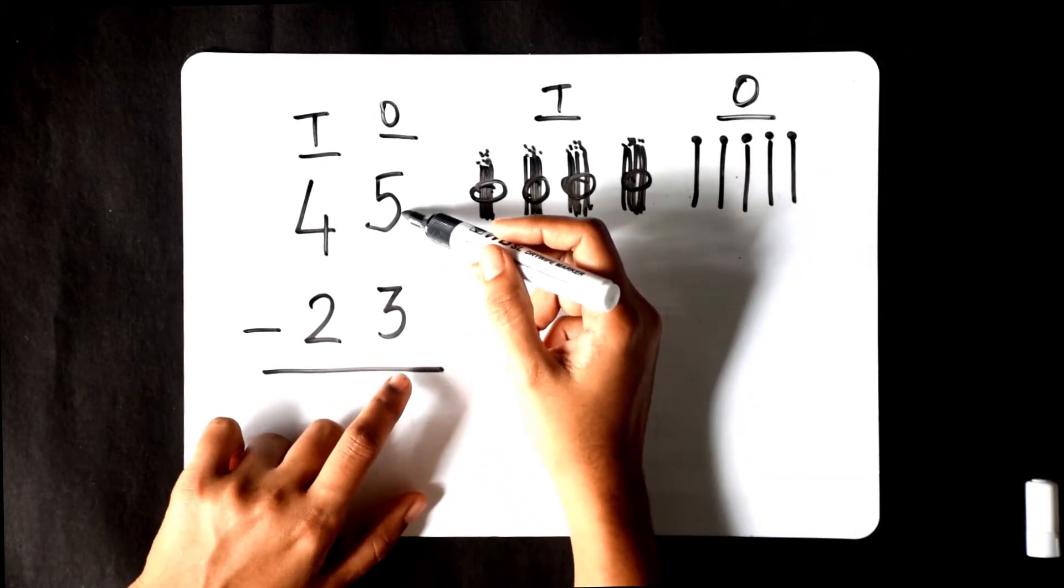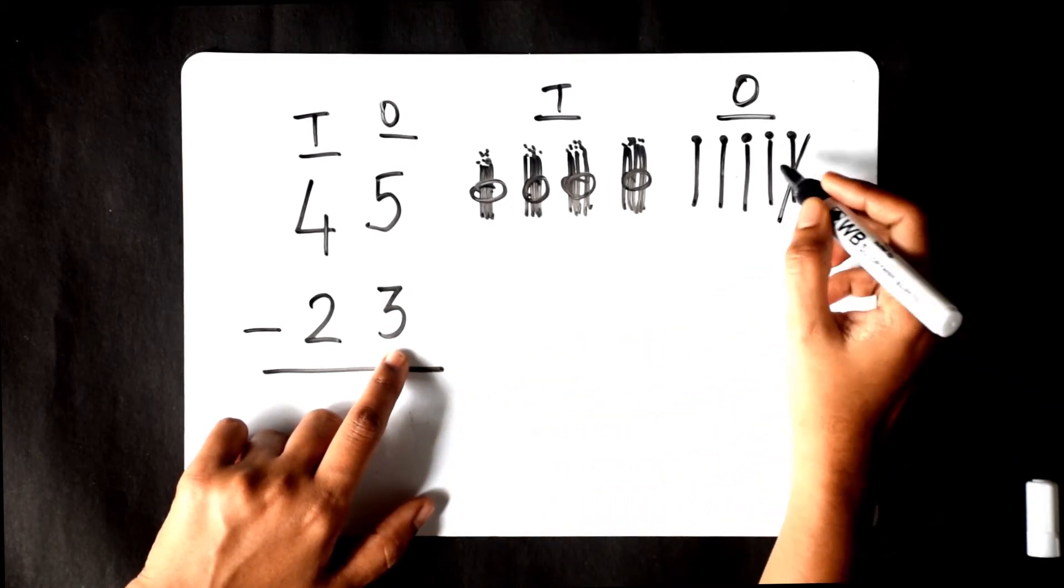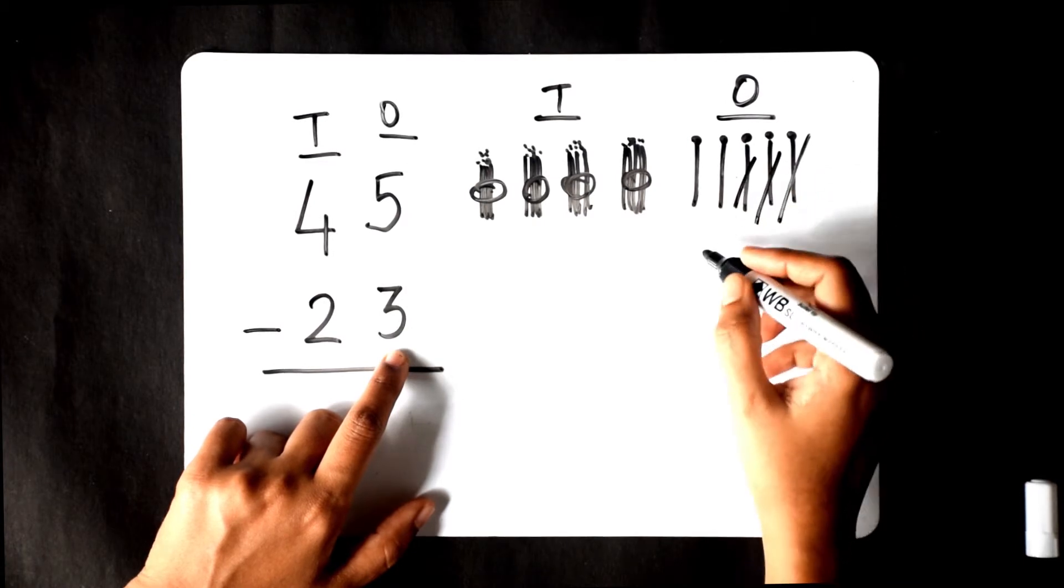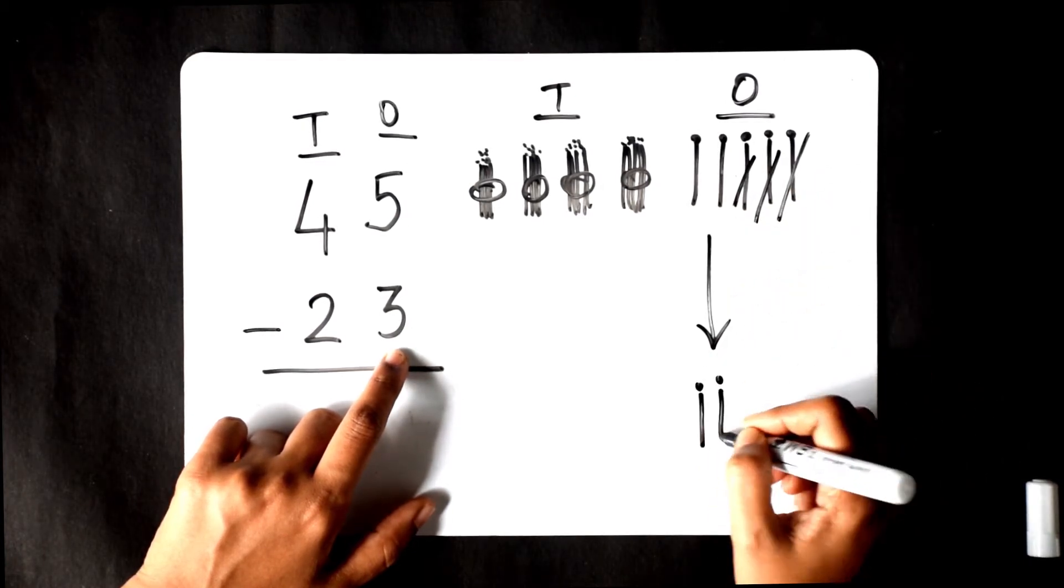From the 5 ones, we have to take out 3 ones. Let's strike them off and write the remaining ones here. We have 2 ones left.